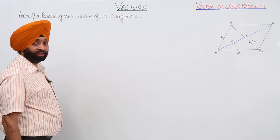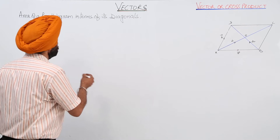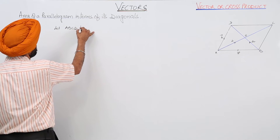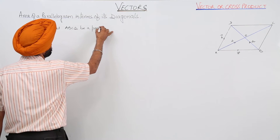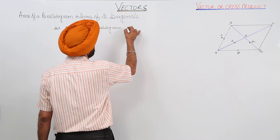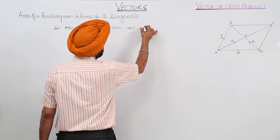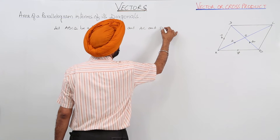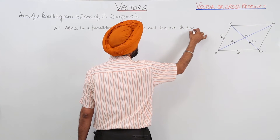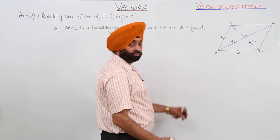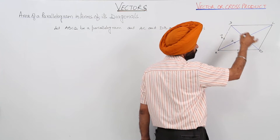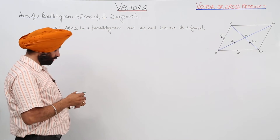Area of a parallelogram in terms of its diagonals. Let ABCD be a parallelogram where AC and DB are its diagonals. In the figure ABCD, AB represents vector a, AD represents vector b, AC and BD are the two diagonals, and O is the midpoint of the diagonals.